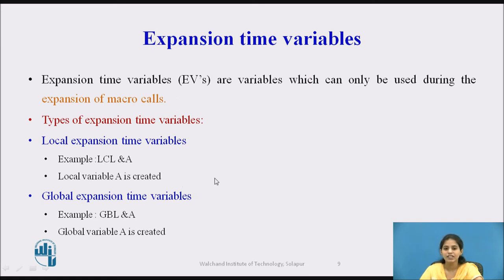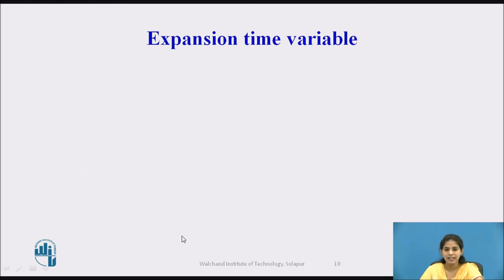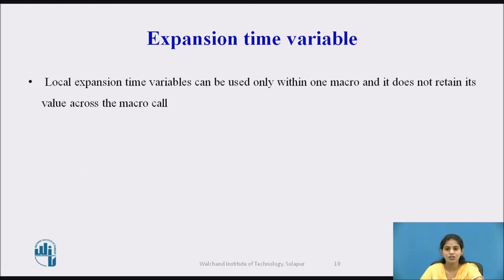For the global expansion time variable, we use the word GBL followed by the variable name, e.g., &A. Local expansion time variables can be used only within one macro and do not retain their value across macro calls.